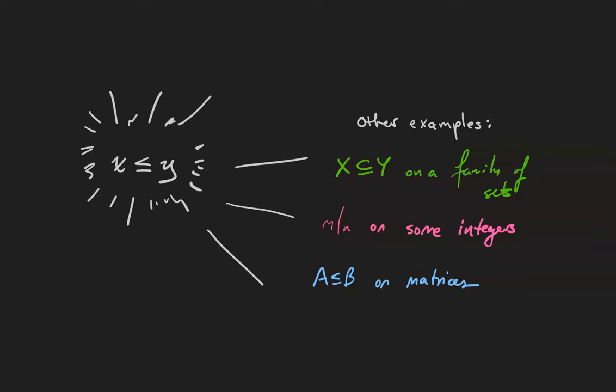We've got some examples we've already seen. The inclusion relation on a power set, the divisibility relation on a set of integers, and our less than or equal to relation on a pair of Boolean matrices.